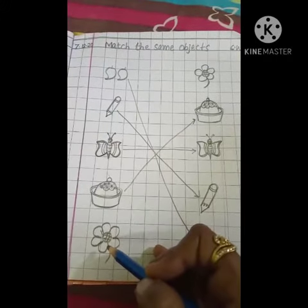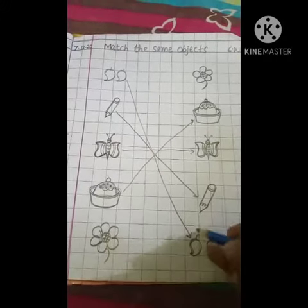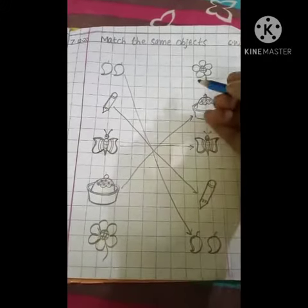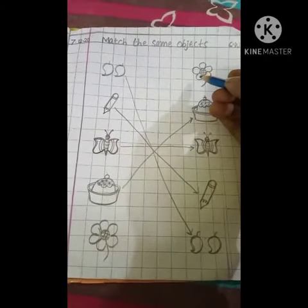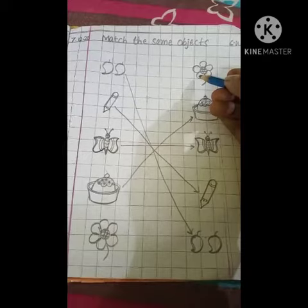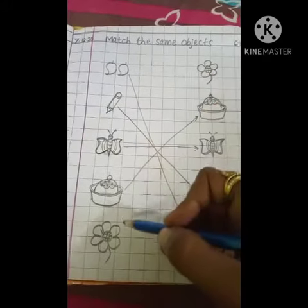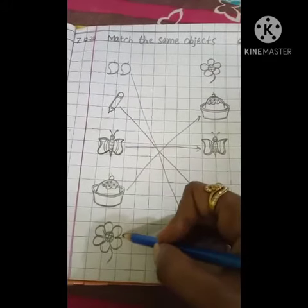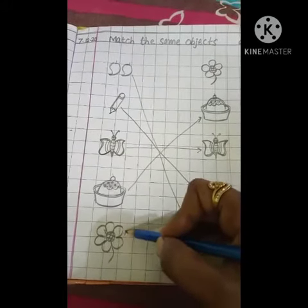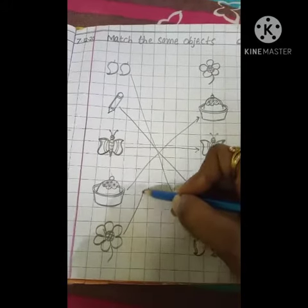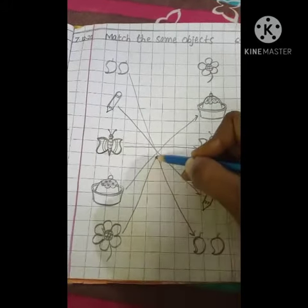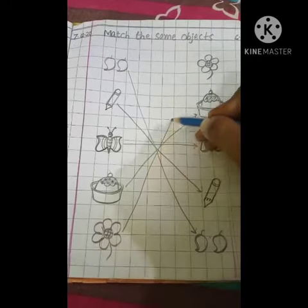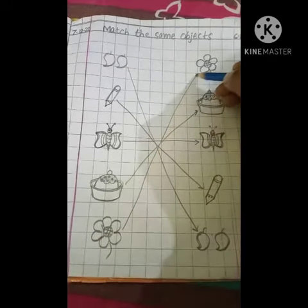Next is flower. Where is the flower? This is the flower. So we will match this to this.